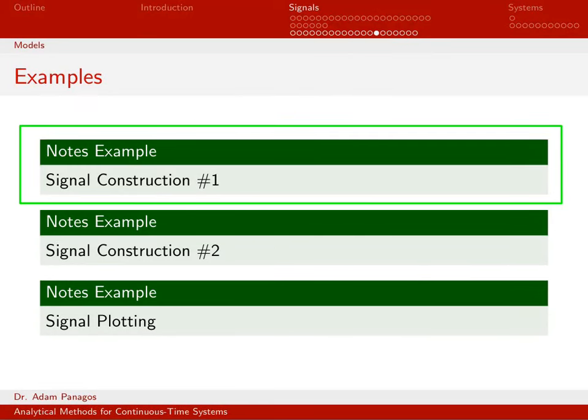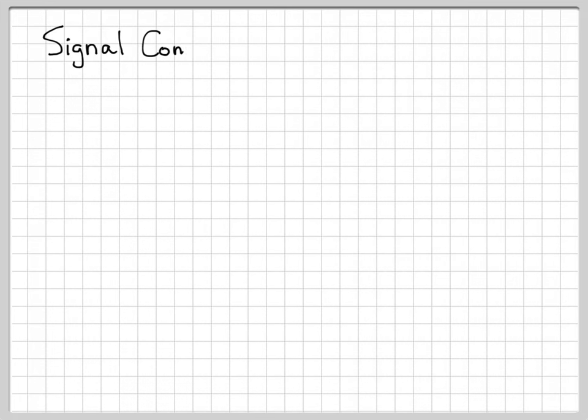In this example, we're going to look at a plot of a signal x(t), and we're going to construct an equation for that signal x(t) using unit step and unit ramp functions. So signal construction number one.